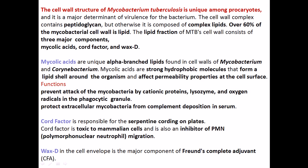Mycolic acids are unique alpha-branched lipids found on the surface of the cell wall of Mycobacterium as well as Corynebacterium, which is another type of bacteria. They are strong hydrophobic molecules in nature and form a kind of lipid shell around the organism.